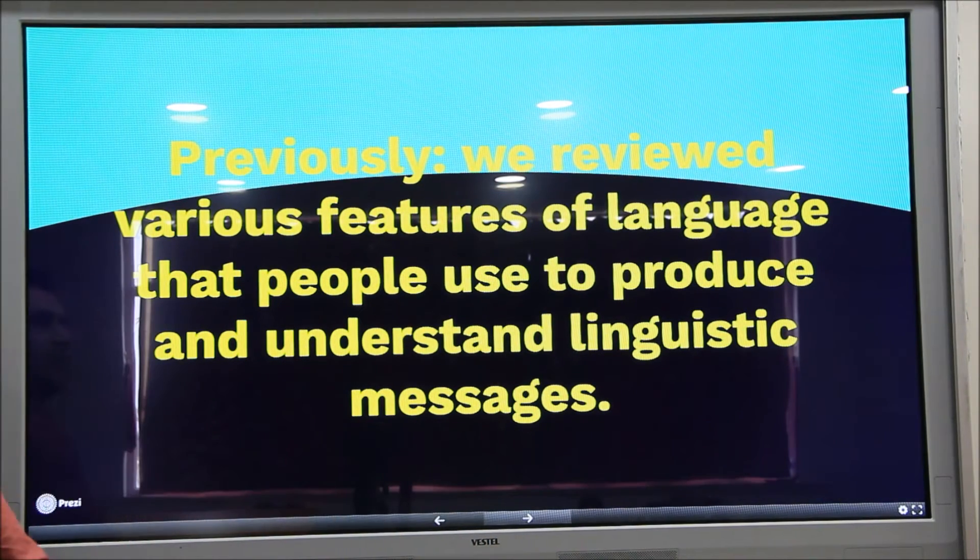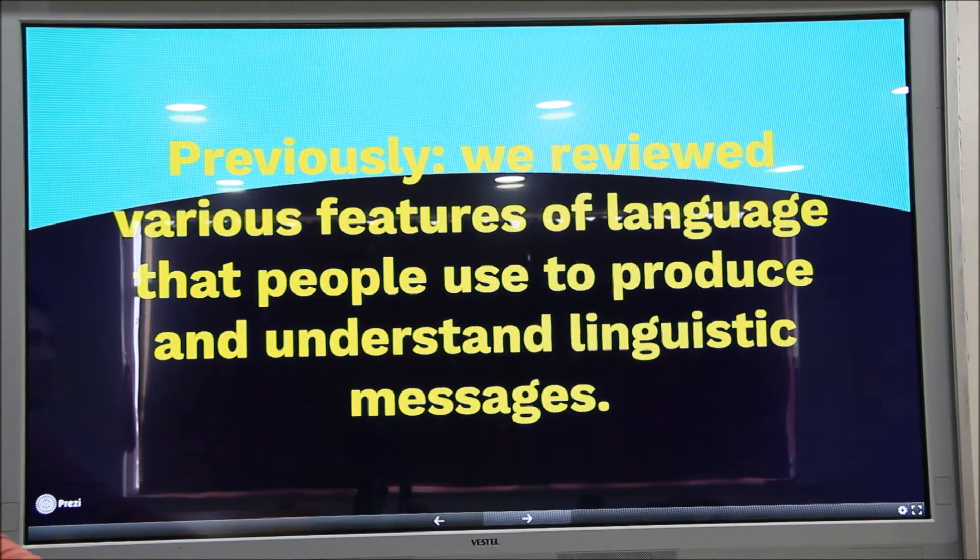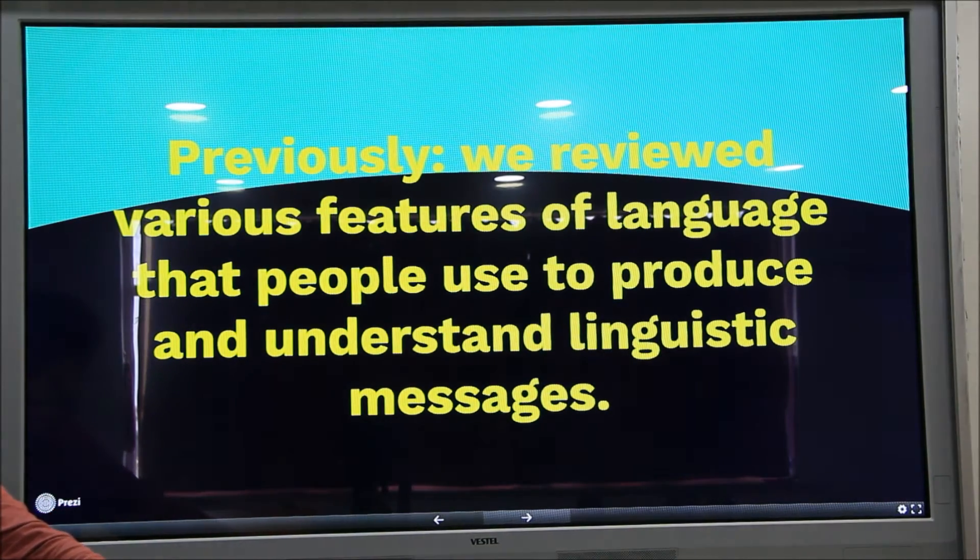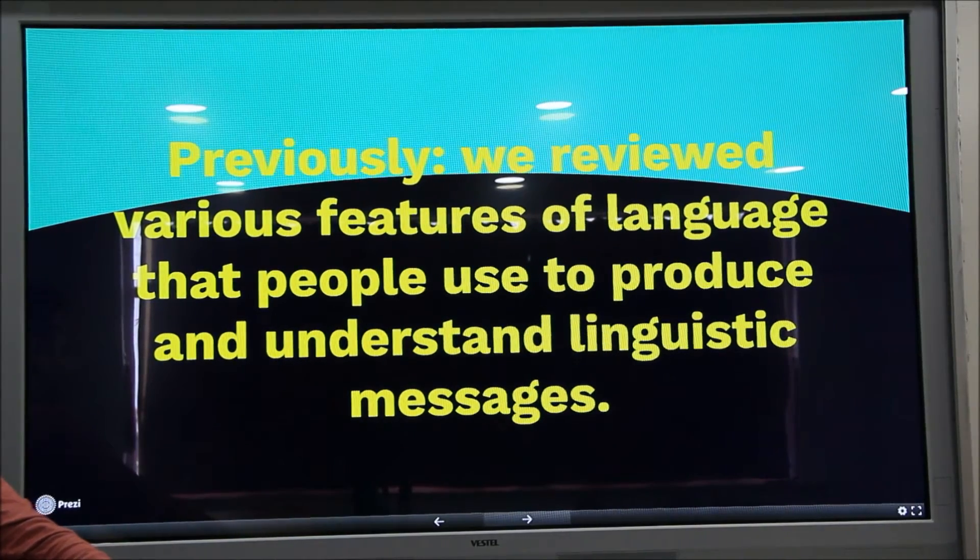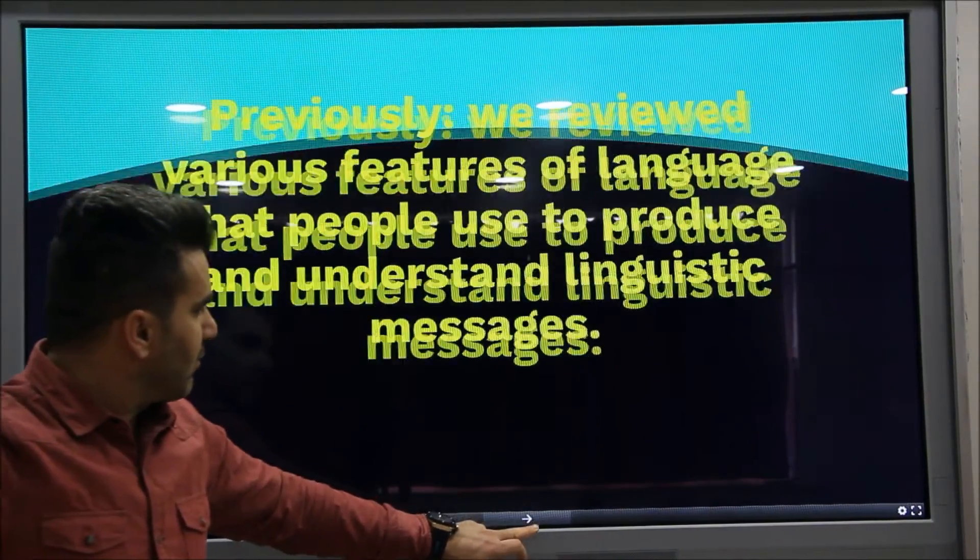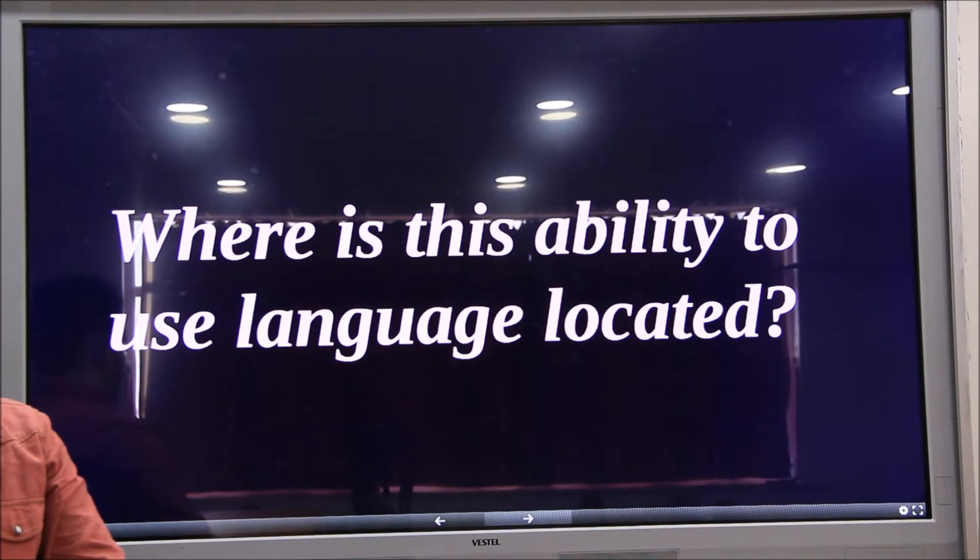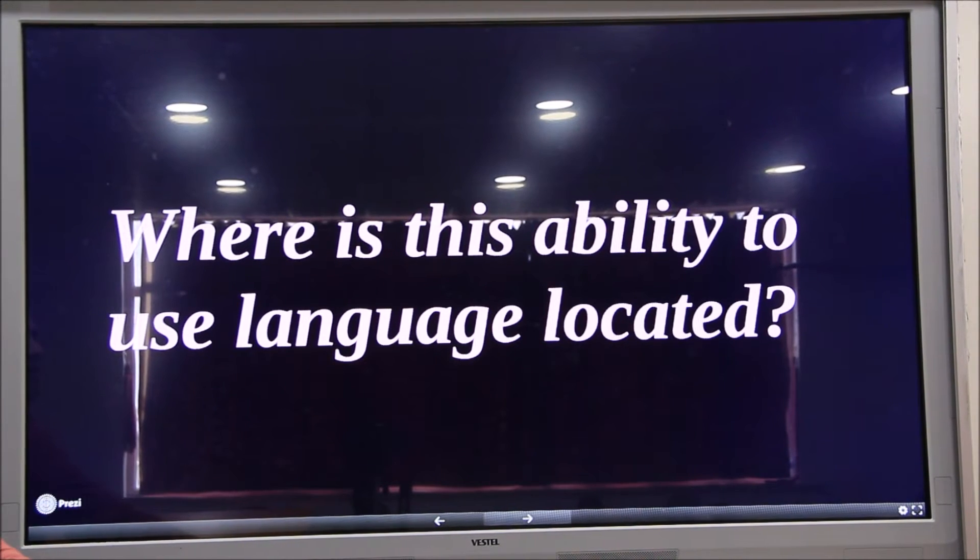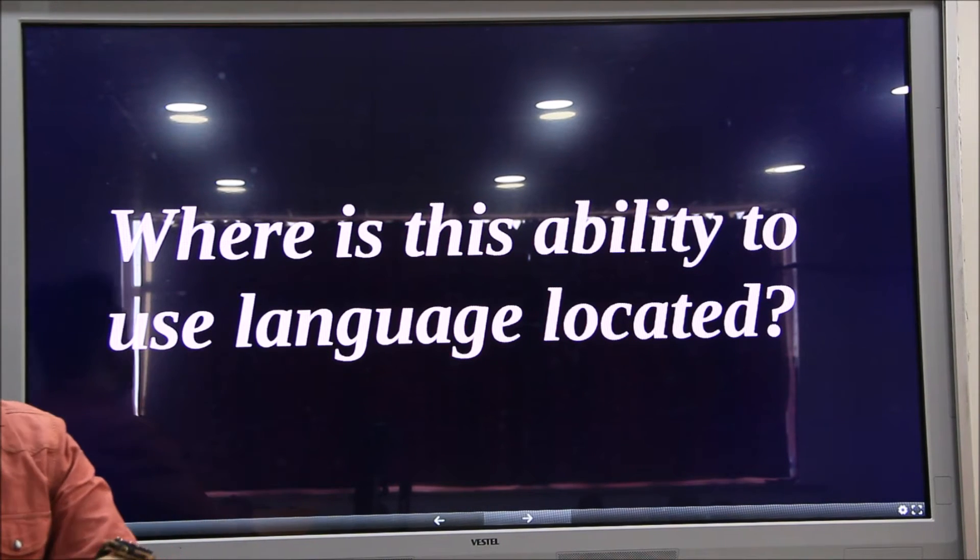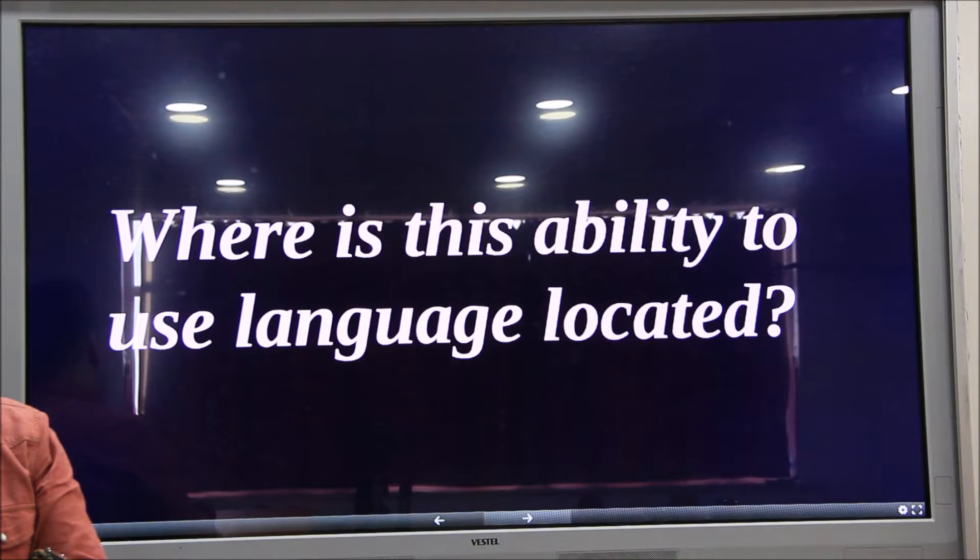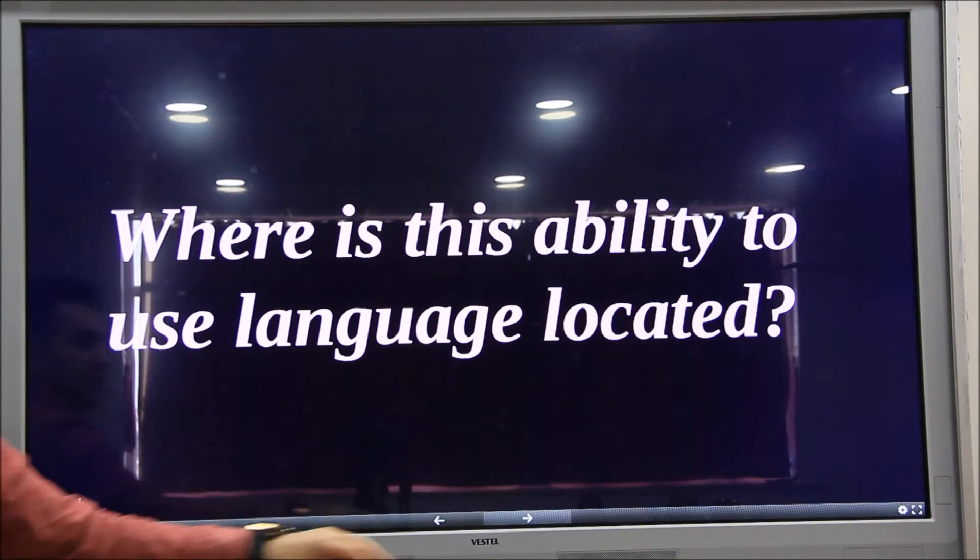Previously we reviewed various features of language that people use to produce and understand linguistic messages. However, as we asked earlier, where is this ability to use language located in our brain? Where is it? Can we see it? Can we identify it? Can we describe it? We're going to look at this location.